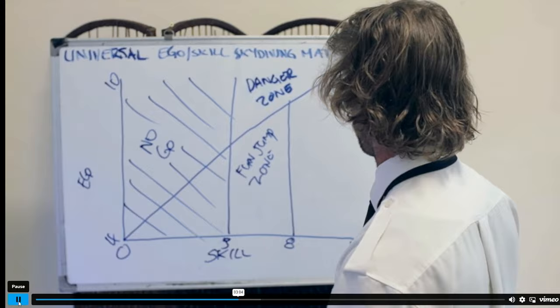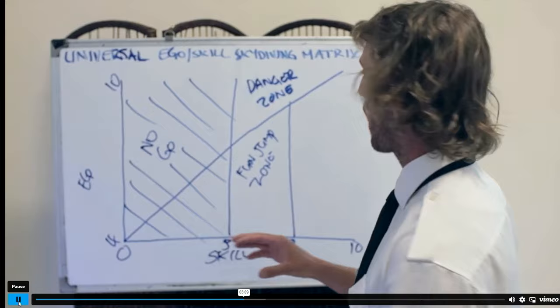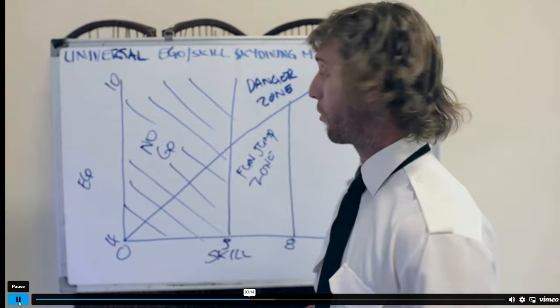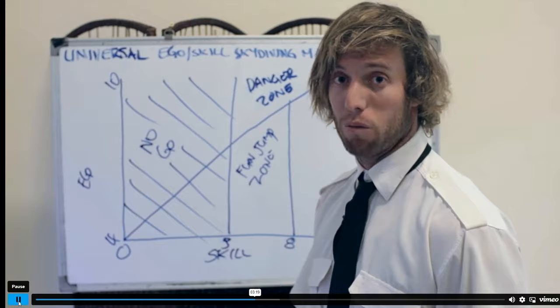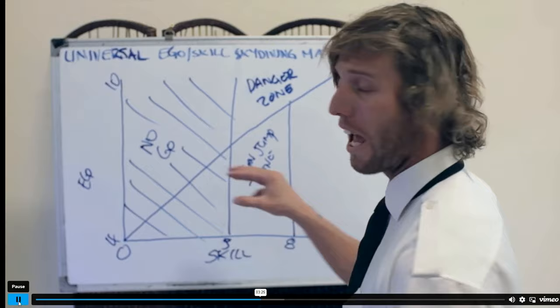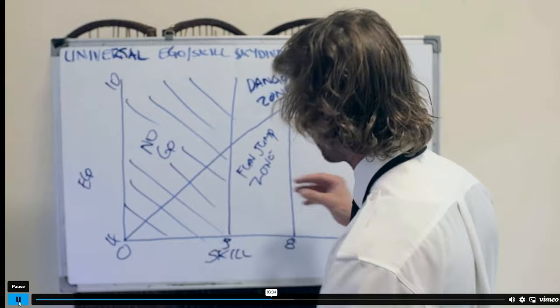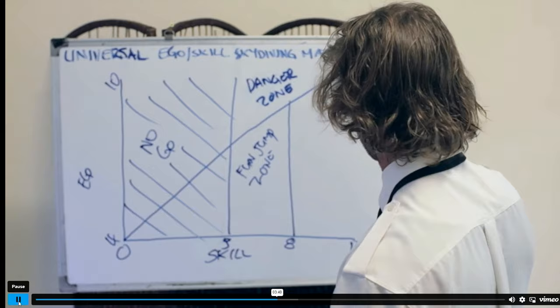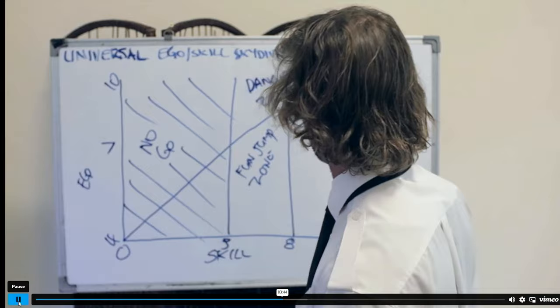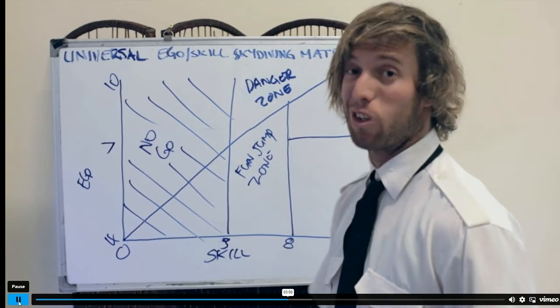This is not a static environment — once you've located a person in one of these zones, they can just up and vanish into another zone at any time. Keep referencing back to this matrix, correlating reliable data to get a cluster of points and relocate the person. Below around a seven ego but above an eight skill, we've got a zone we call the boogie zone.